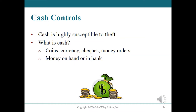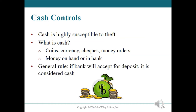What is cash? From an accounting perspective, cash generally consists of coins, currency, paper money, checks, and money orders. Cash may be held directly by the company or be on deposit at financial institutions. The general rule is that if the bank will accept it for deposit, it is cash. Cash can either be on hand in the company's cash register or safe, or on deposit in a bank or similar financial institution.